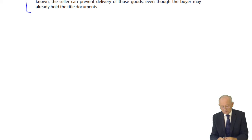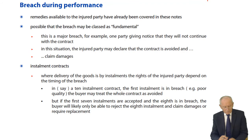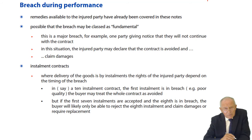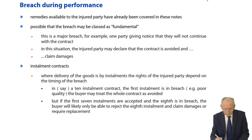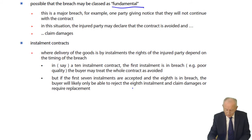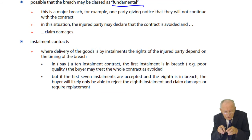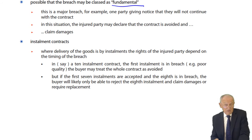When goods have already been dispatched before the potential breach becomes known, the seller can prevent delivery by contacting the carrier and saying, don't deliver — even if the buyer has documents of title. Regarding fundamental breach: a fundamental breach is one that goes to the root of the contract — a major breach with reference to conformity: quantity, quality, description, packaging, or timing. Where one party is in fundamental breach, the injured party may declare the contract avoided and claim damages.